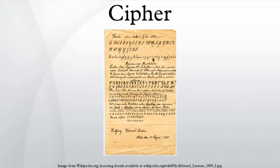During the early 20th century, electromechanical machines were invented to do encryption and decryption using transposition, polyalphabetic substitution, and a kind of additive substitution. In rotor machines, several rotor disks provided polyalphabetic substitution, while plug boards provided another substitution. Keys were easily changed by changing the rotor disks and plug board wires. Although these encryption methods were more complex than previous schemes and required machines to encrypt and decrypt, other machines such as the British Bombe were invented to crack these encryption methods.